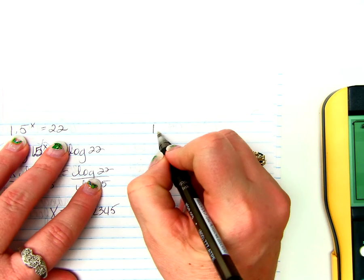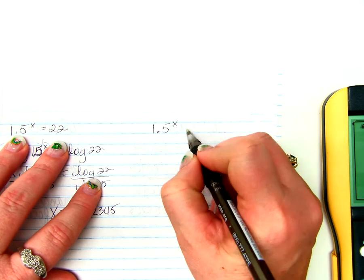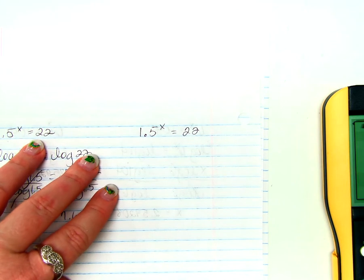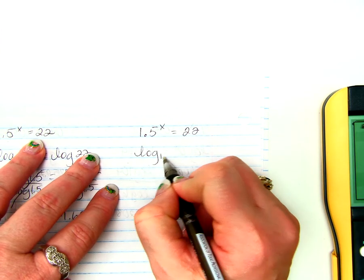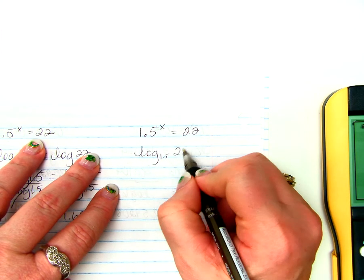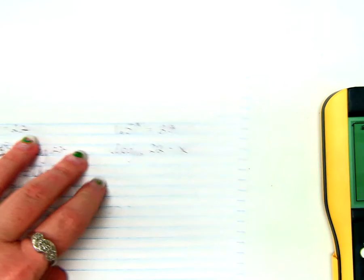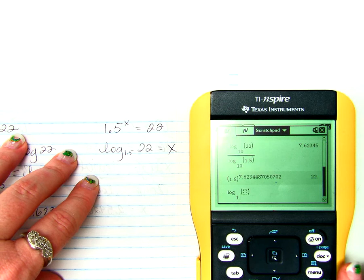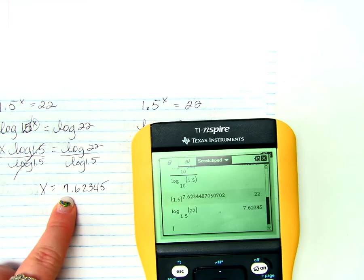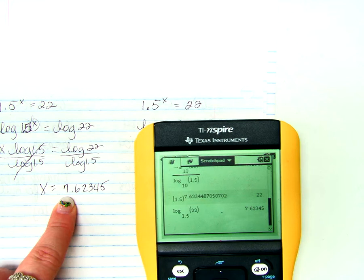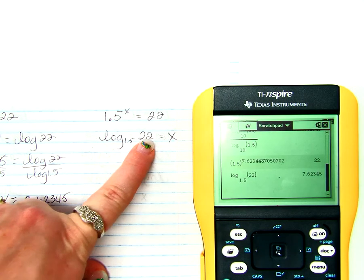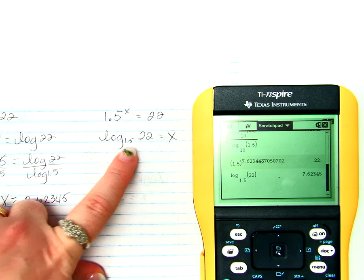If we're going to solve this problem right here, 1.5 to the x equals 22, by writing it into logarithmic form, we would say log base 1.5 of 22 equals x, and sure enough, when we say log base 1.5 of 22, gives us the same answer that we just got on the previous side. If we had to use the change of base formula, we would do log of 22 divided by log of 1.5.